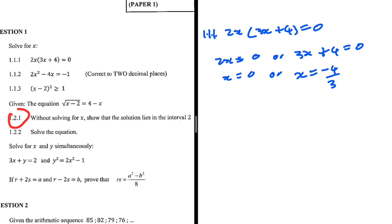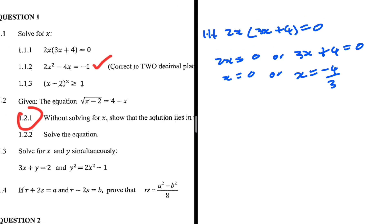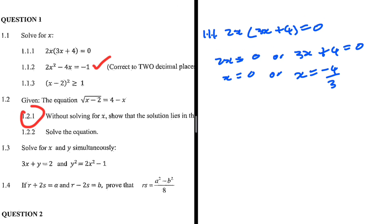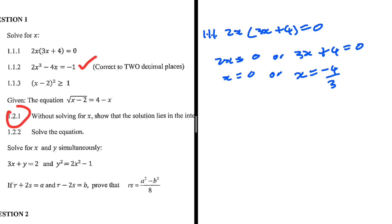Take a look at 1.1.2: we're supposed to solve 2x squared minus 4x equals minus 1, correct to two decimal places. We know we are supposed to use the quadratic formula as soon as we see 'correct to two decimal places.' I'm quite convinced we all know how to do that, so let's jump straight to 1.1.3.